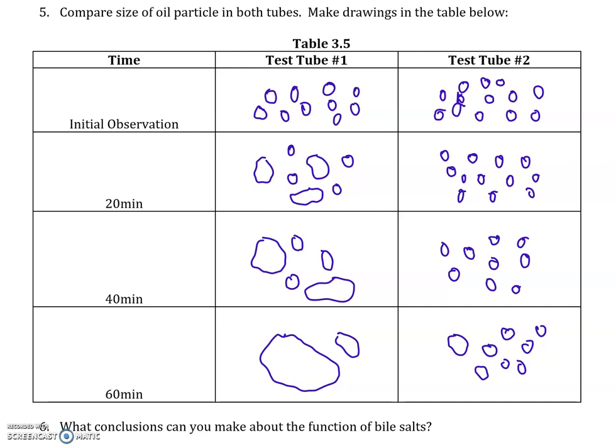But after about 20 minutes, the fat droplets start to merge in the test tube that doesn't have any emulsifier, as opposed to test tube 2, which has emulsifier — the droplets stay small. After 40 minutes it gets worse with no emulsifier, and after 60 minutes the oil droplets have all fused together into basically one drop. But in test tube 2 with emulsifier, the droplets are still small.